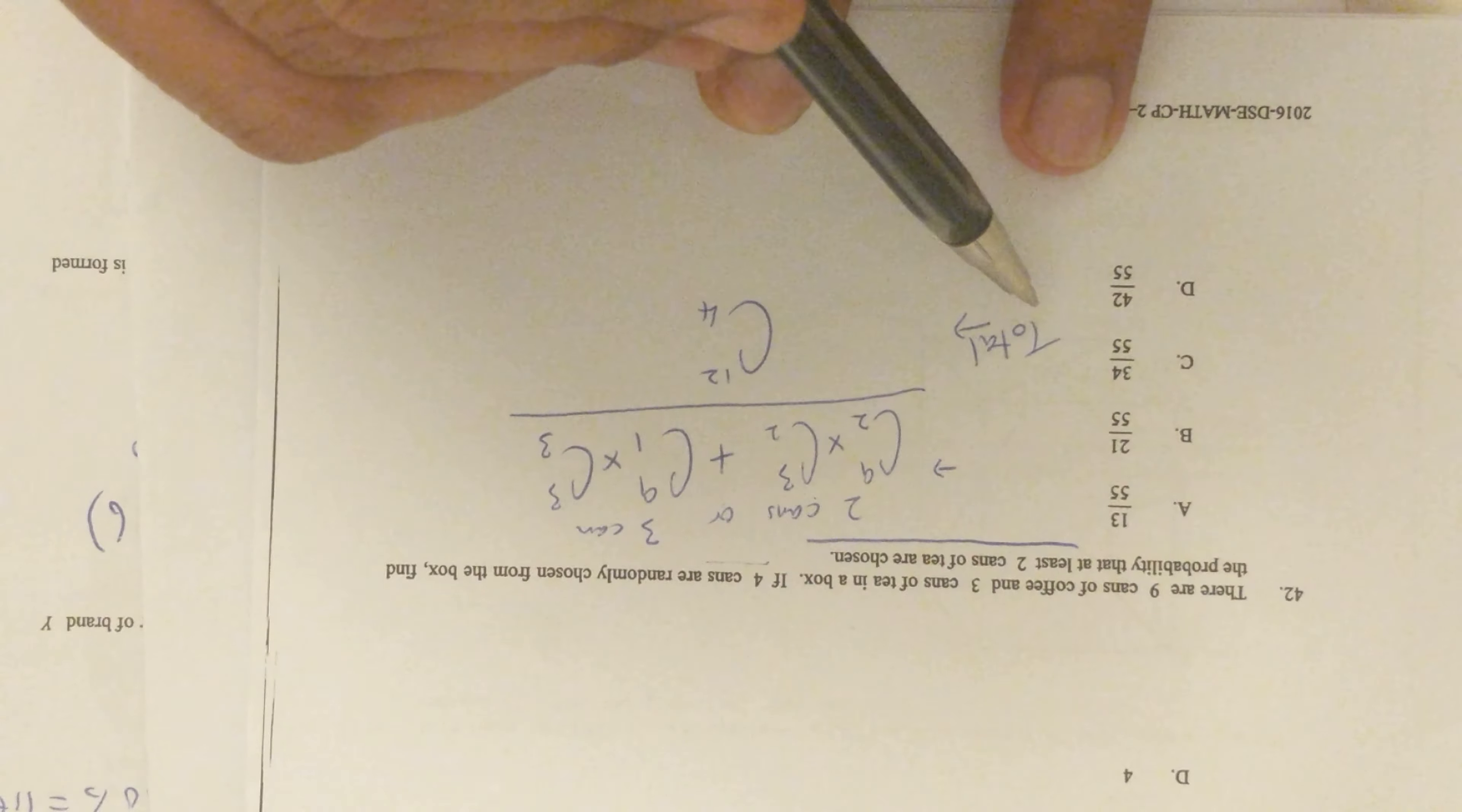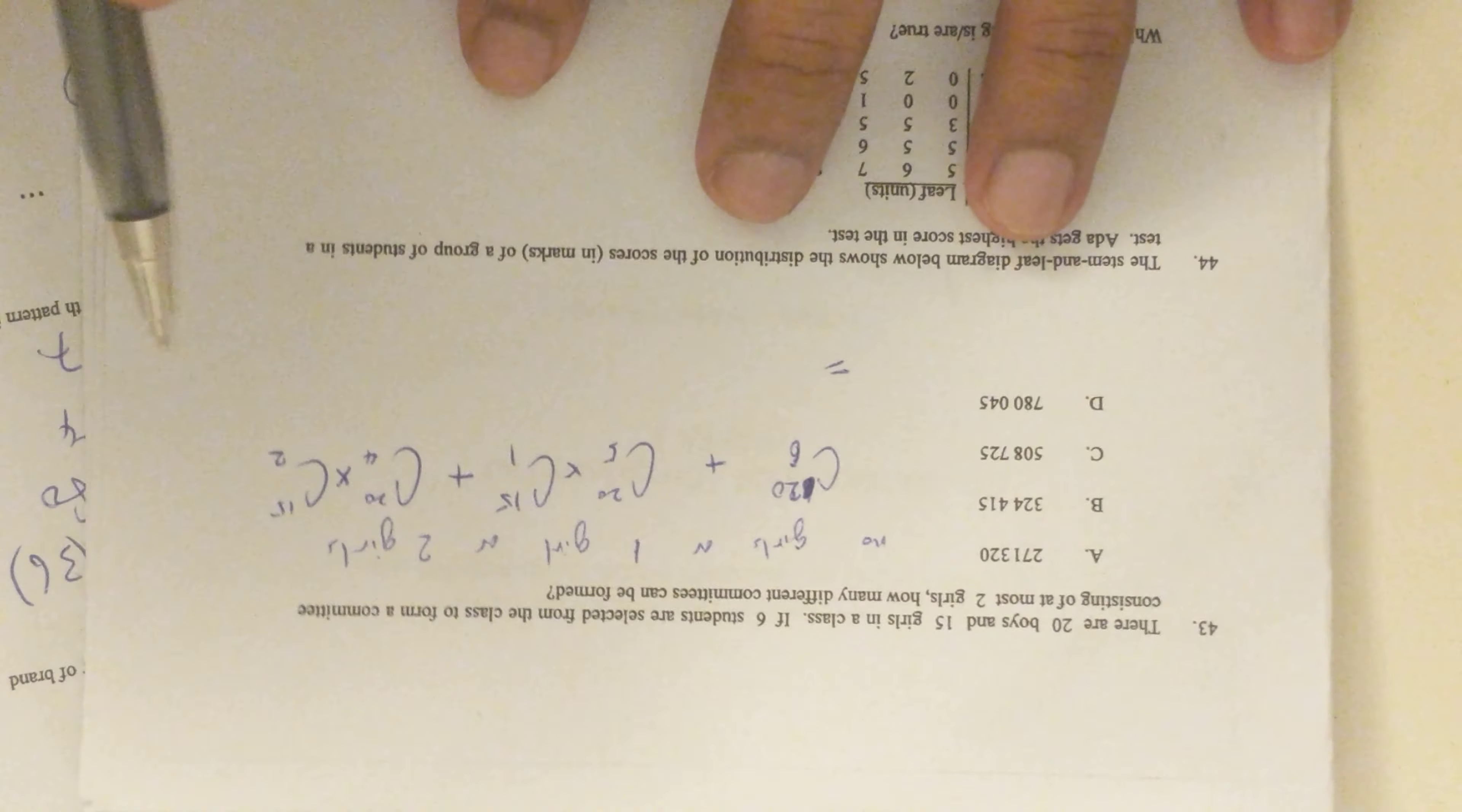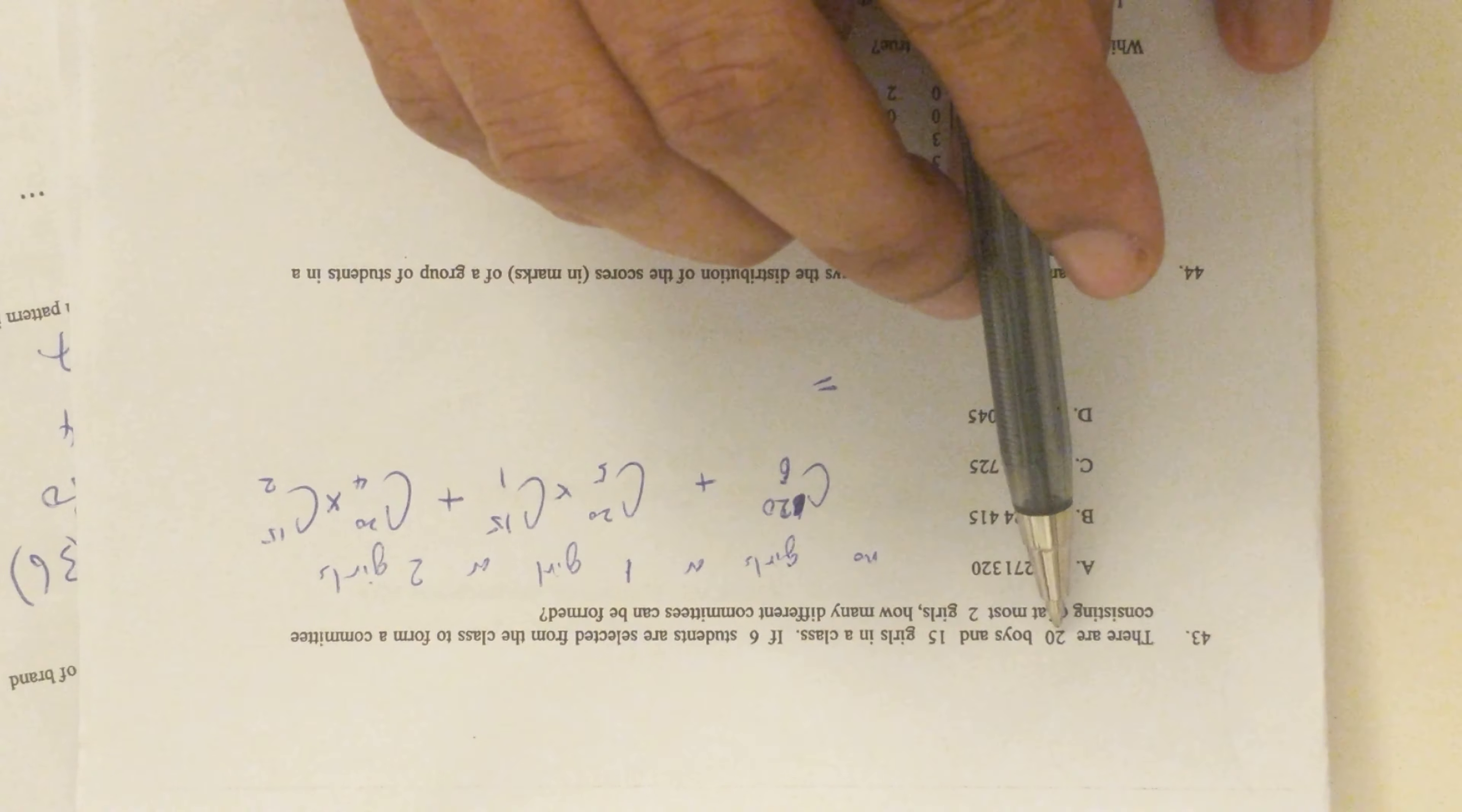Surprisingly, this paper had two questions very similar, but in this case they are not asking for probability - they are asking for total different combinations. They're saying that there are 20 boys and 15 girls, and 6 needs to be selected from the class with at most two girls.